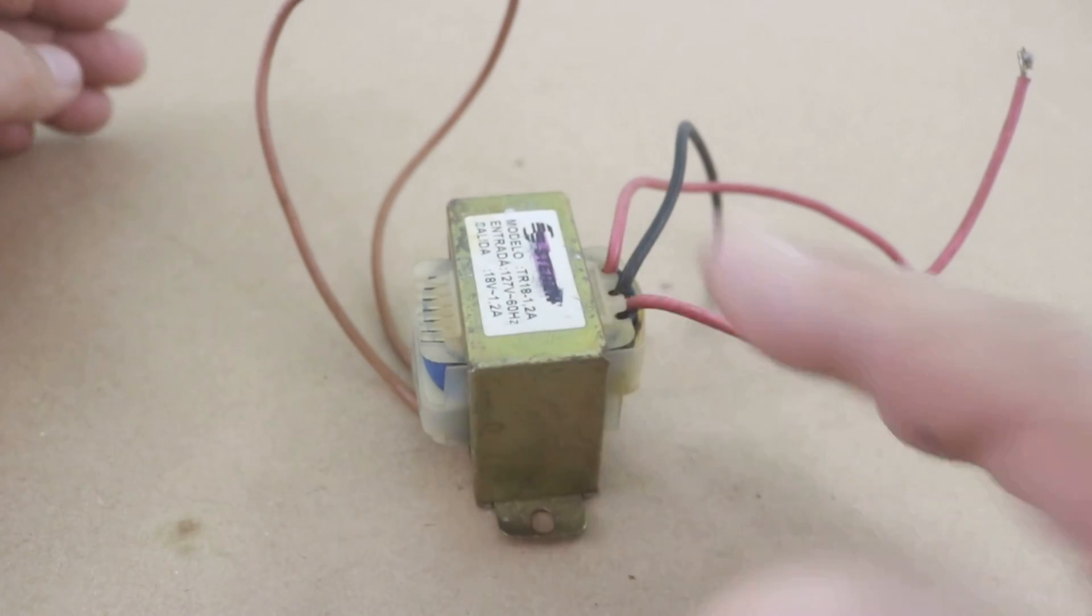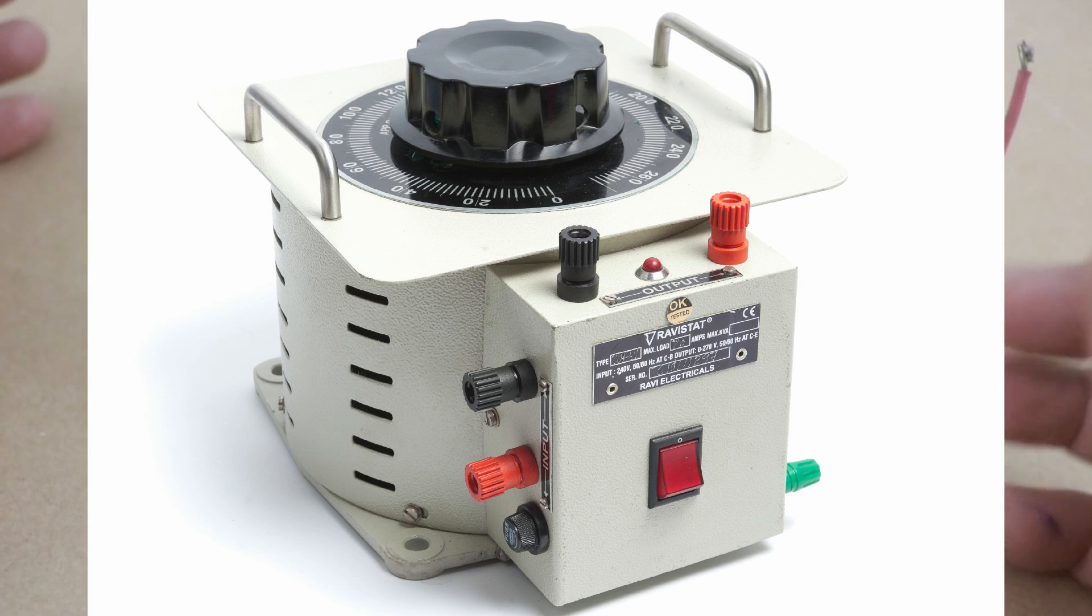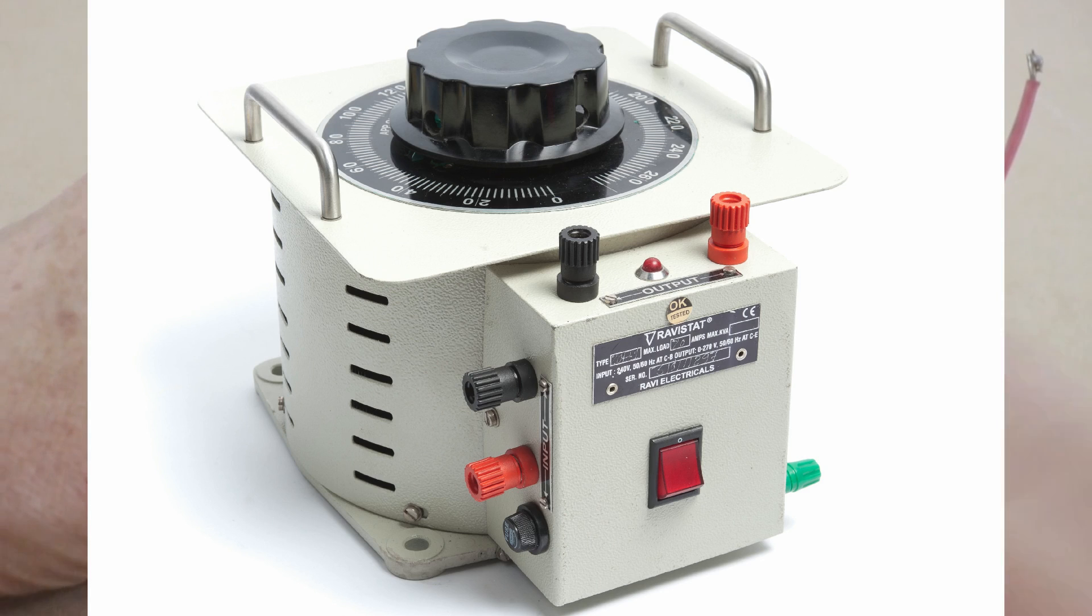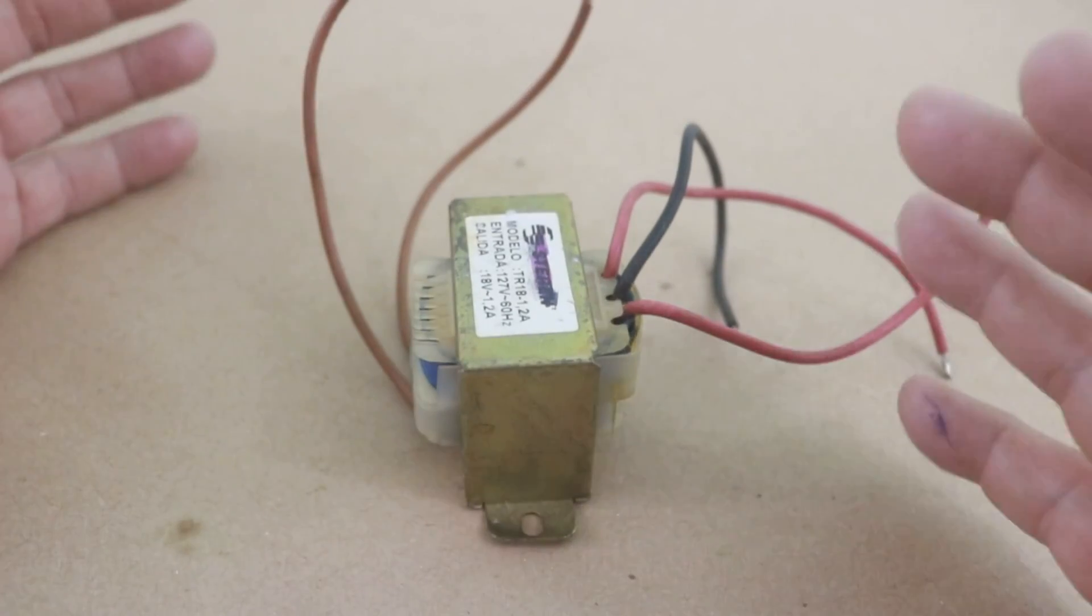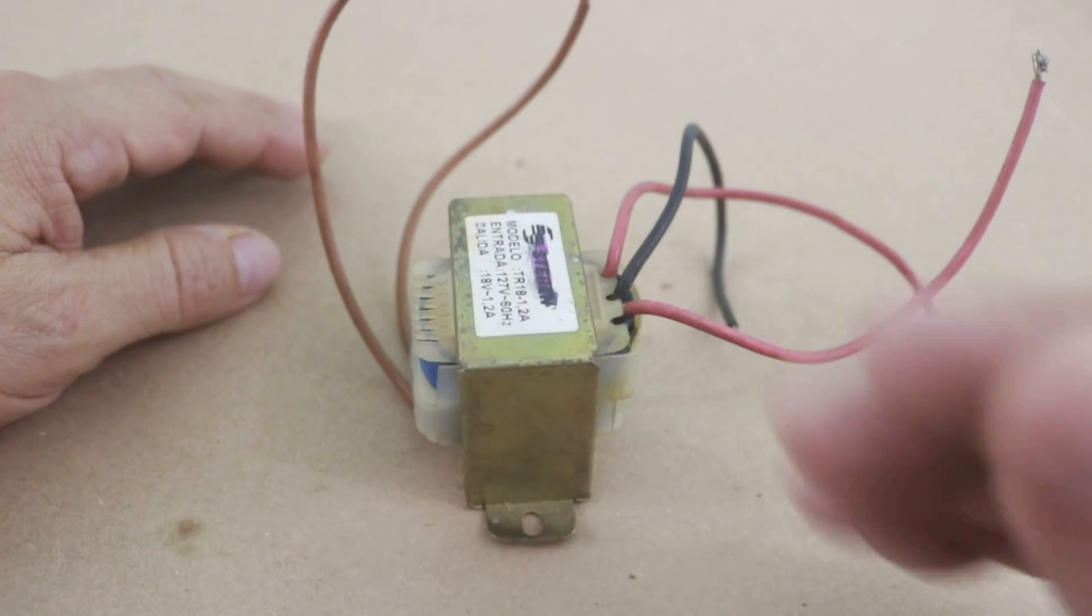Also in an autotransformer they are normally built so that the connection between the two windings can be varied so the output voltage can vary continuously. In this way you can select the voltage that you need at the output.